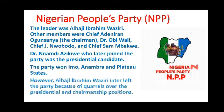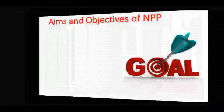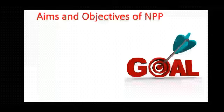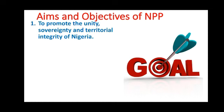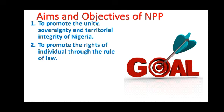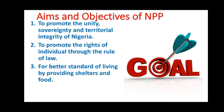What were the aims and objectives of the NPP? The aims and objectives of the NPP include: to promote the unity, sovereignty, and territorial integrity of Nigeria; to promote the rights of individuals through the rule of law; to provide better standard of living by providing shelter and food; and to promote a self-reliant economy.